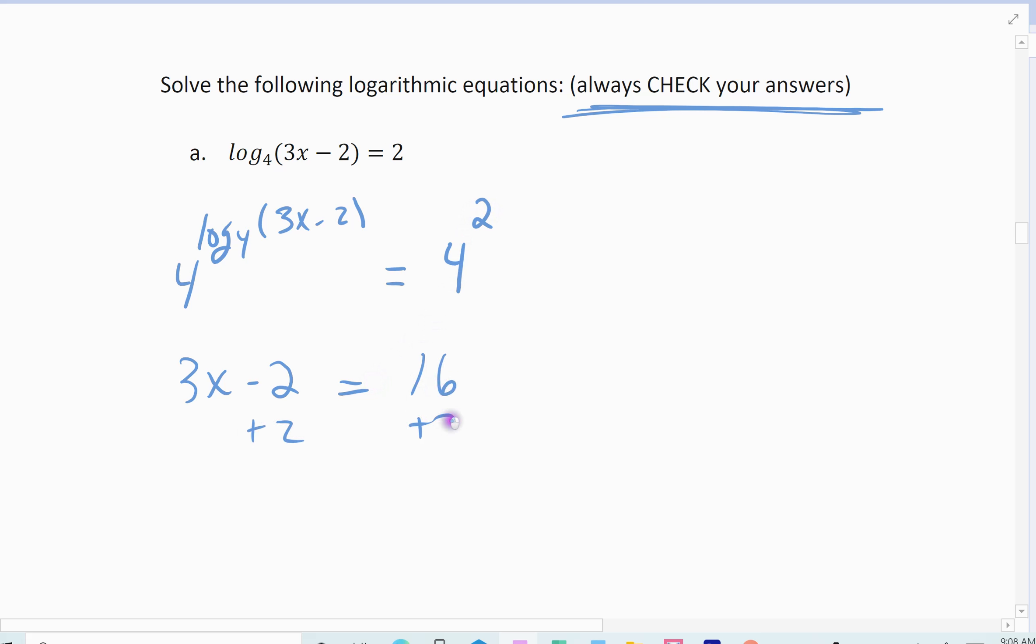So add 2, add 2, so 3x equals 18, divide by 3, x equals 6, and then you check. If I plug 6 in, am I going to get a 0 or a negative, and I'm fine. Alright, 3 times 6 will give me 18 minus 2, and so this checks.